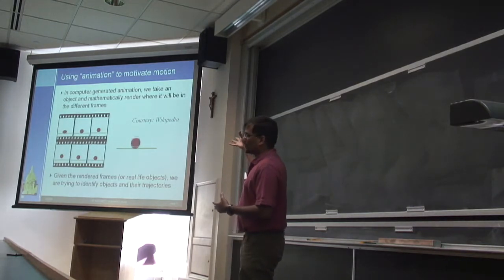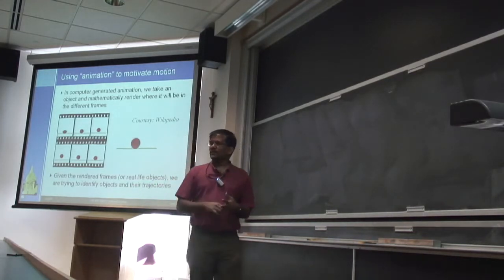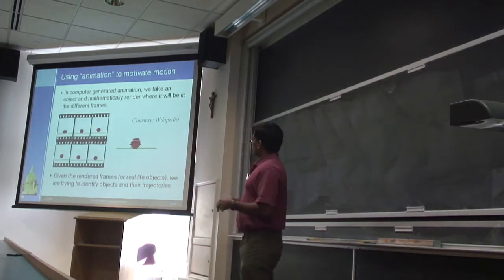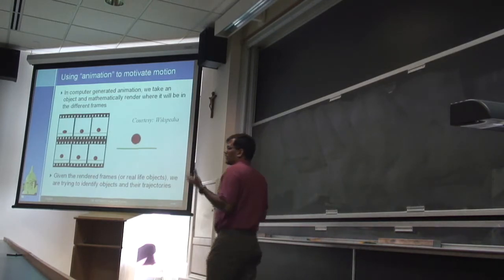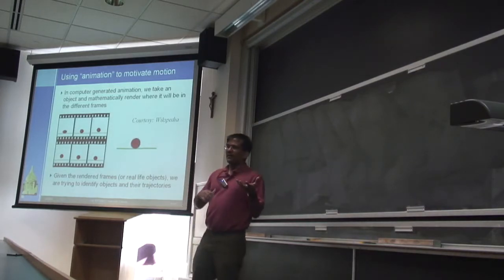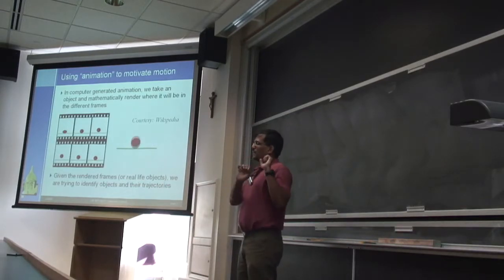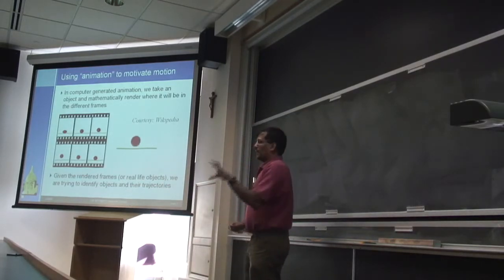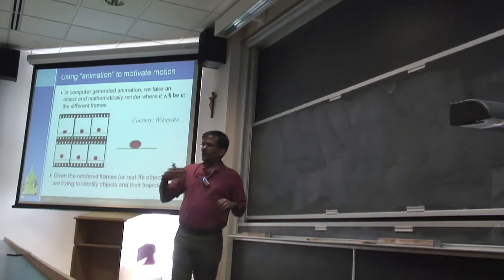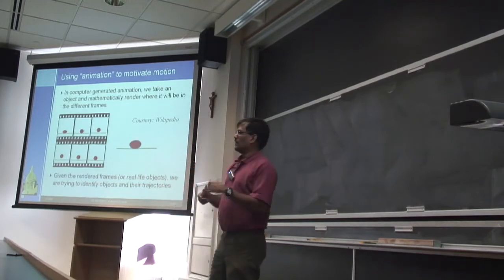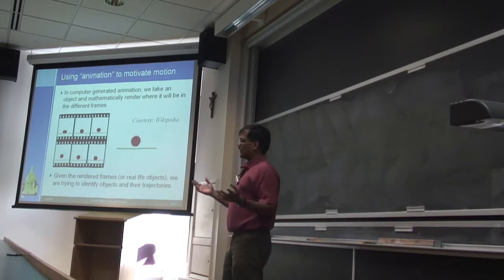I figured I'll use the notion of animation to explain what we are trying to achieve and why it's so hard to do the compression. So in the simple form of animation, you create some sort of object — the more complex the object, the more realistic it looks — but in the simple form, you take some object and if you want to animate, you figure out where this object would be at different points in time.